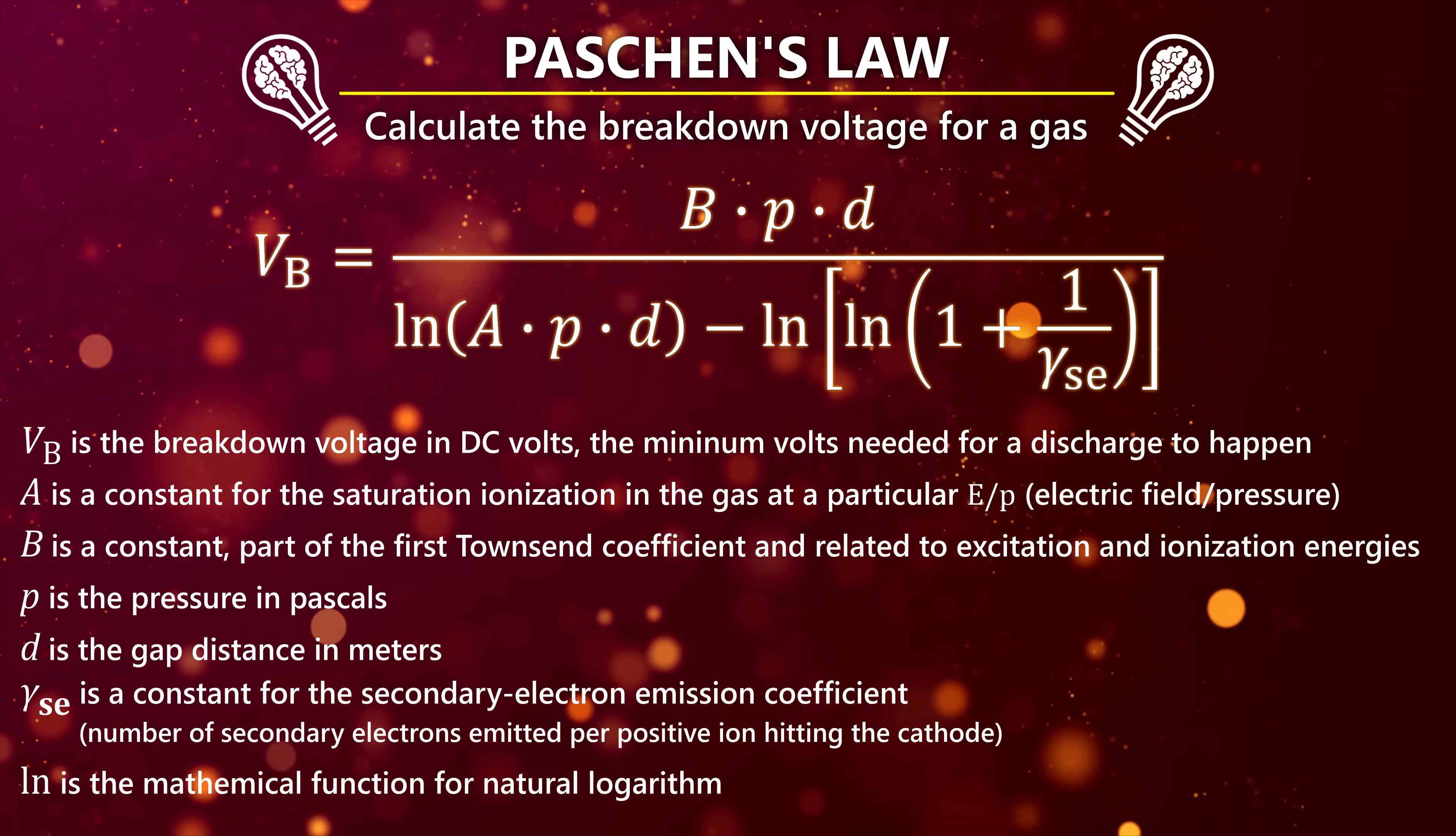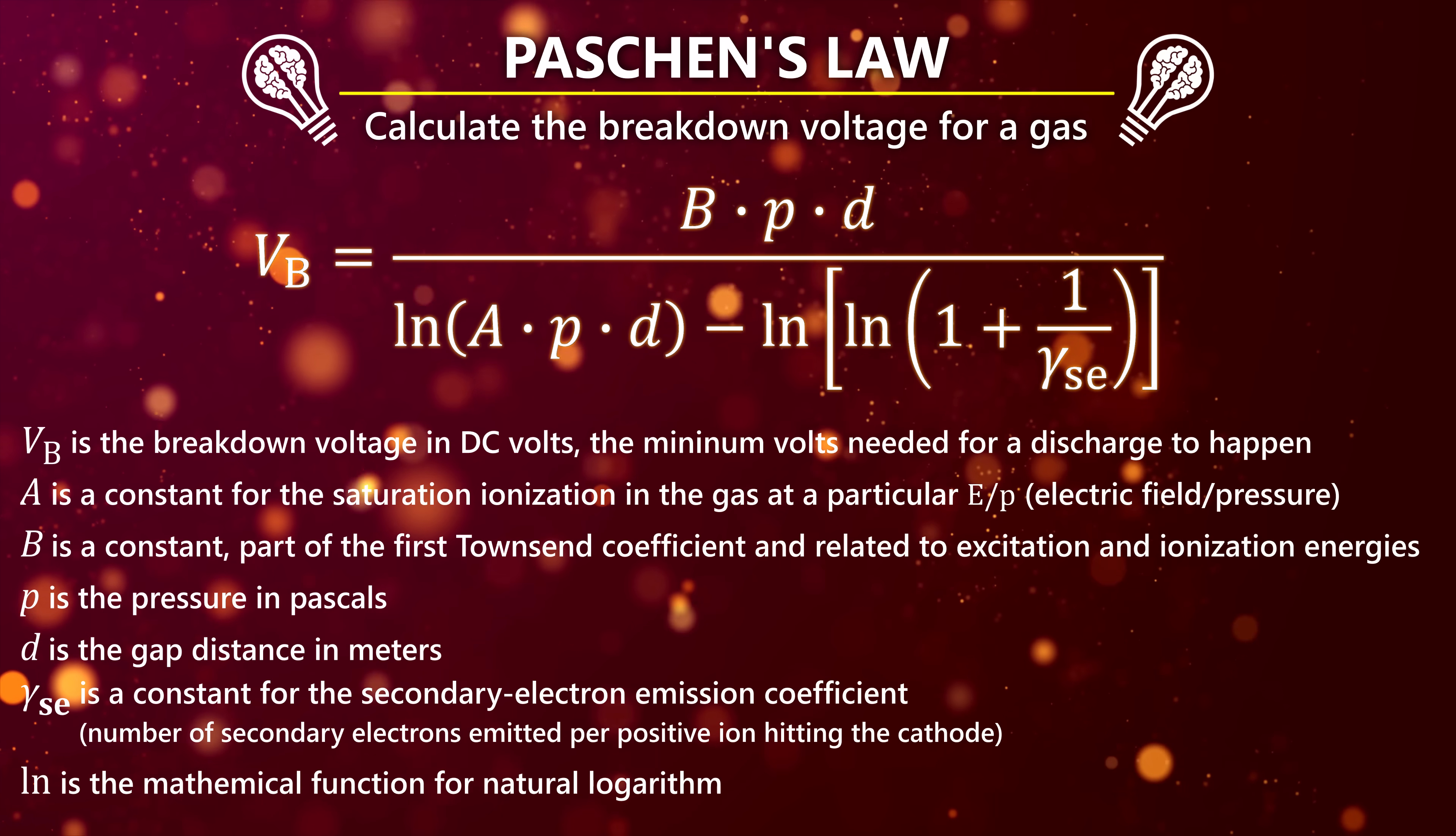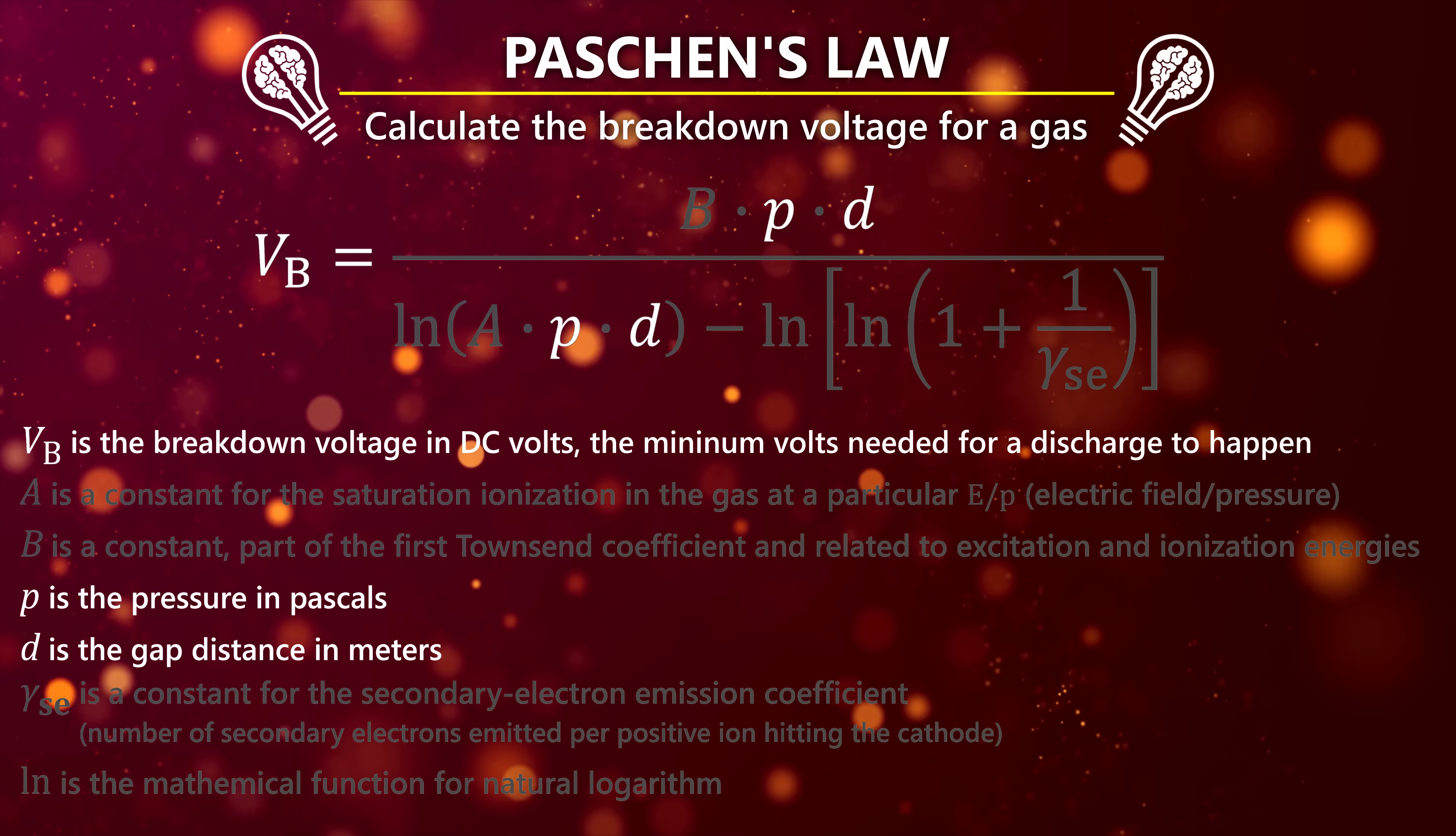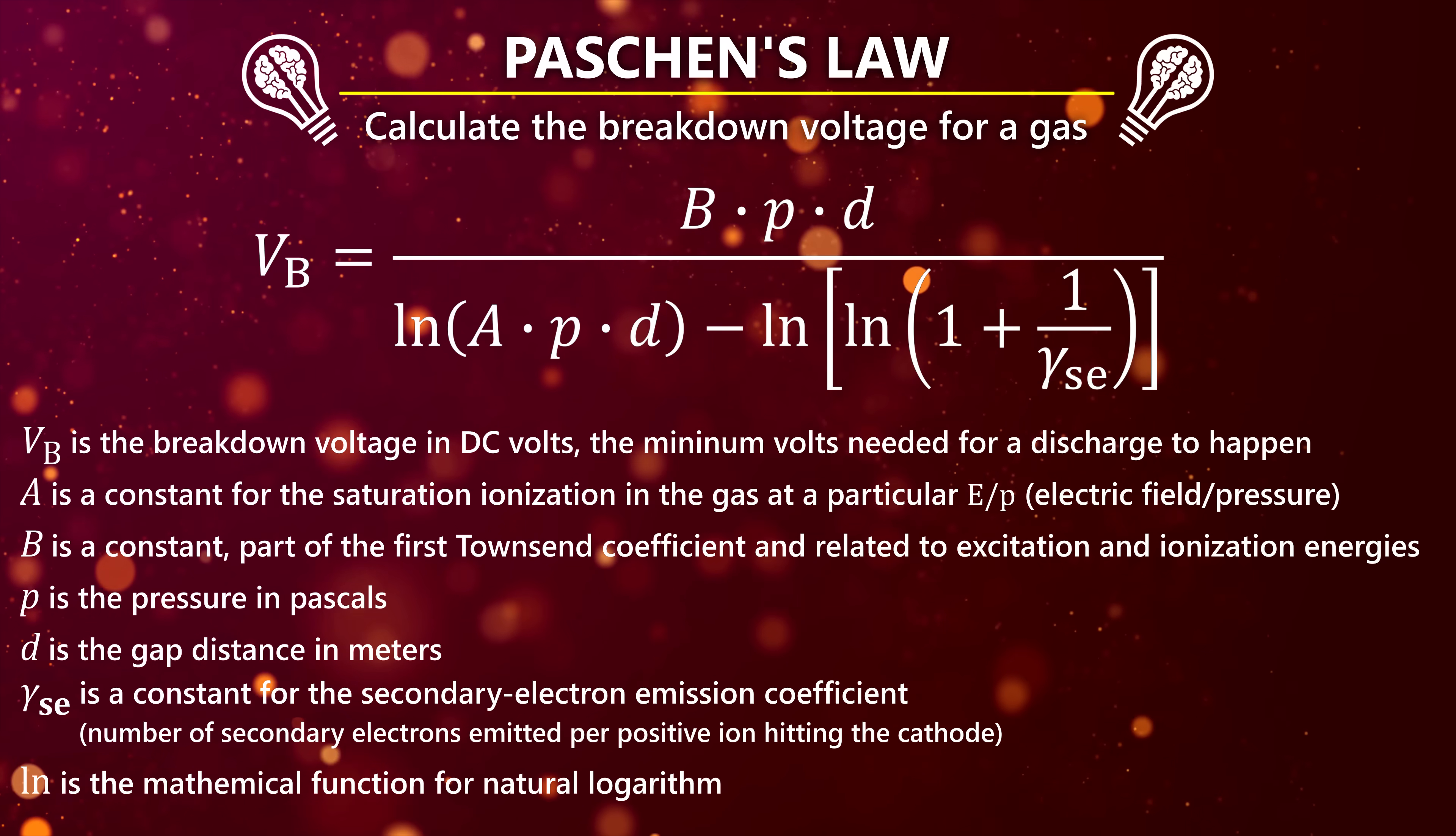This equation is Paschen's law. This can be used to calculate the voltage needed for gas to break down into a discharge between two electrodes. Relevant for a neon flame effect bulb. It shows that the voltage for the discharge is dependent on the pressure of the gas and the distance between the electrodes, but not in a linear way.